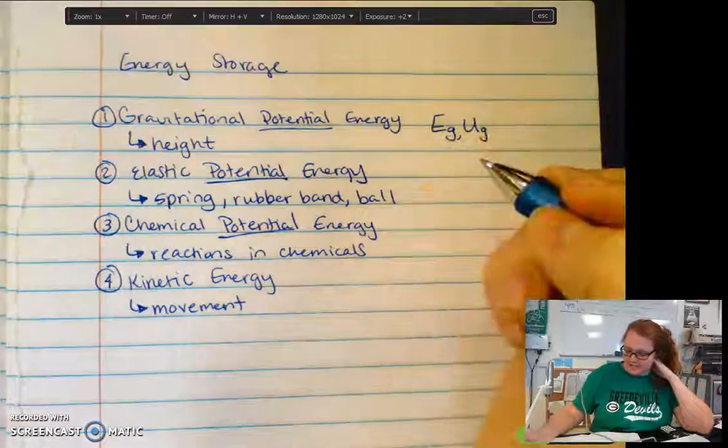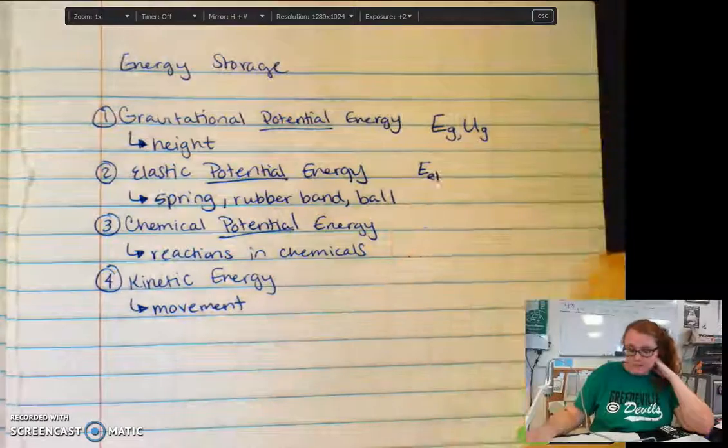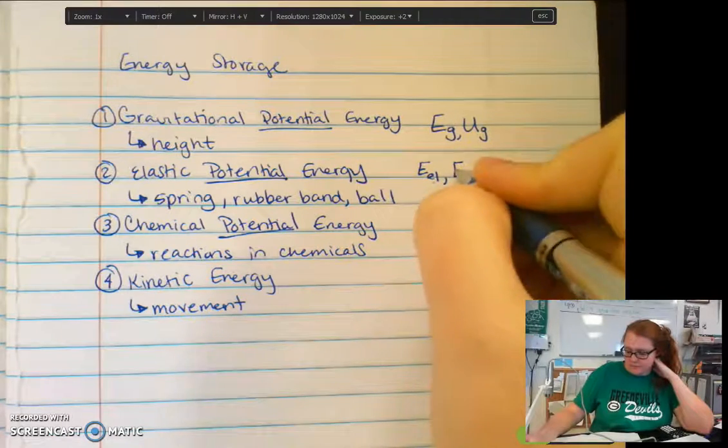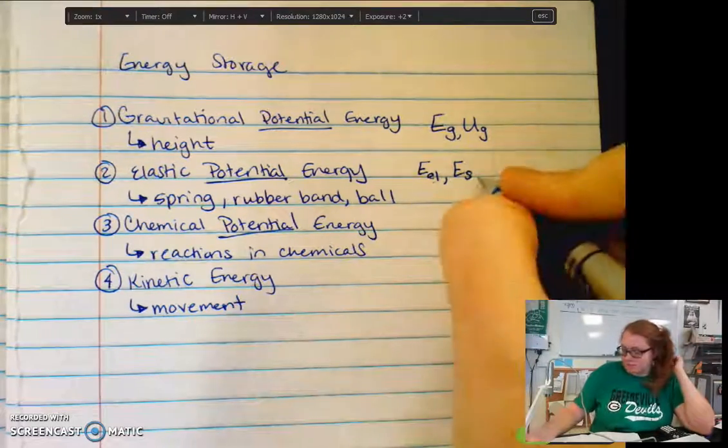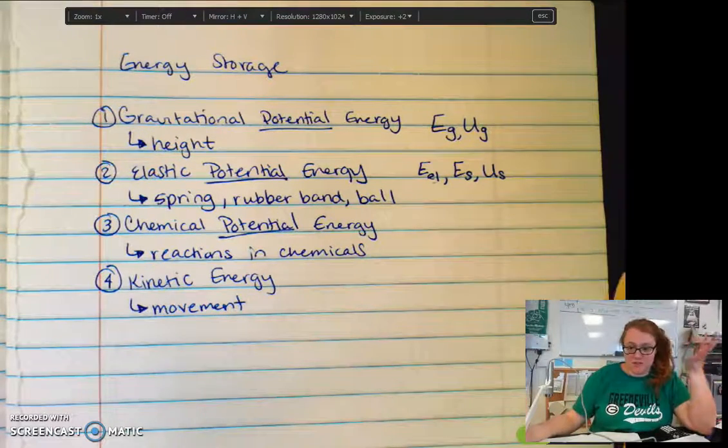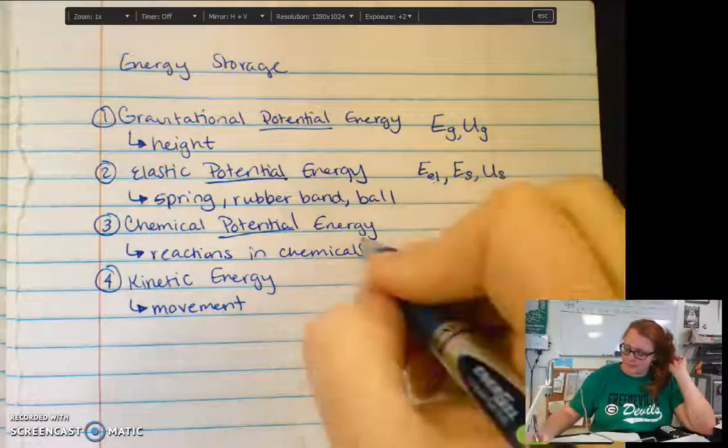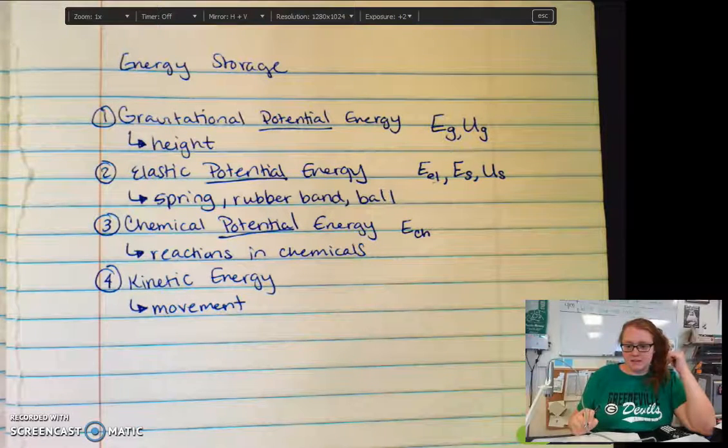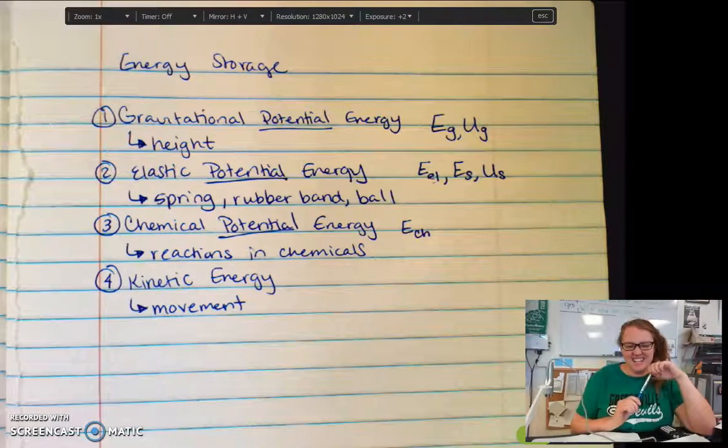Elastic potential energy is written as Eel, the el here meaning elastic, or Es as in the elastic potential energy in a spring particularly. Or I like to write it as Us. Again, the U is just potential energy. That's how I learned it. I'll try to be consistent using Eel or Es. Chemical energy is Ech, makes sense.